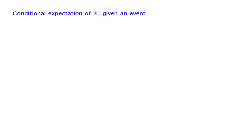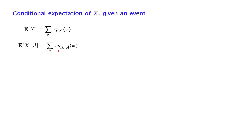We can now continue the same story and revisit everything else that we had done for discrete random variables. For example, we have the expectation of a discrete random variable and the corresponding conditional expectation, which is just the same kind of object, except that we now rely on conditional probabilities.